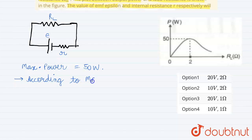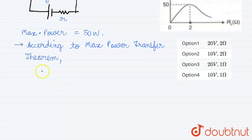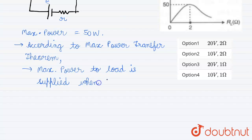Now according to maximum power transfer theorem, the maximum power to load is supplied when load resistance equals internal resistance. So this is important. Now at max power we can see that load resistance is 2 ohms, so our internal resistance r will be 2 ohm.